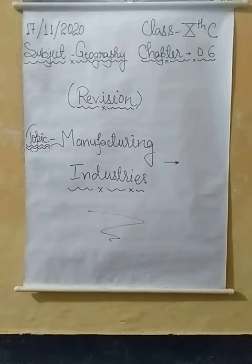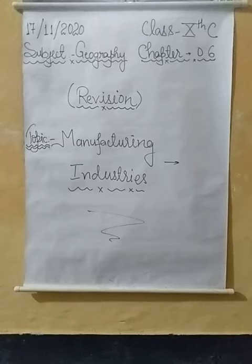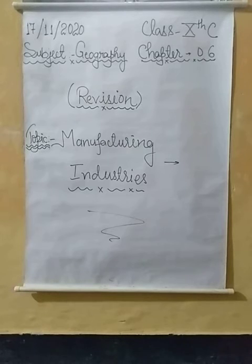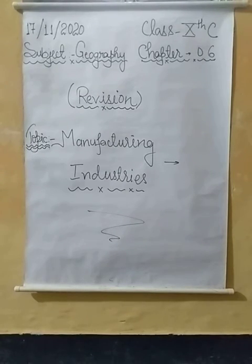Next, industries using minerals and metals as raw materials are called mineral based industries. Some of the important industries in this category are as follows. Number one is iron and steel industry — the iron and steel industry is the base of all industries. It provides all types of machinery to run other industries and is also known as a heavy industry.